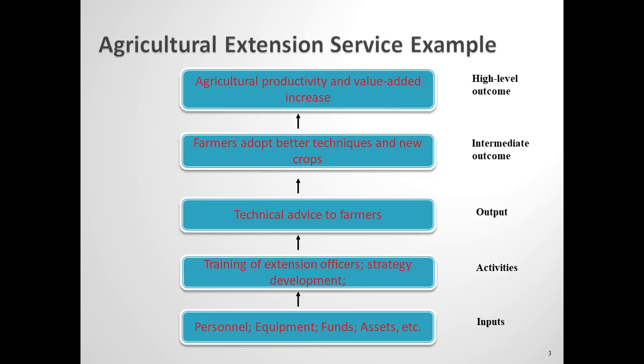Let's take a concrete example of the results chain in the case of agricultural extension services, which is the provision by agriculture ministries of technical advice to farmers. It's the technical advice itself which is the output in this case, whether it's in the form of agriculture ministry technical officers going out and meeting with individual farmers to give them advice, or whether that advice is given in meetings to groups of farmers or possibly in other forms.